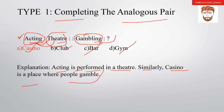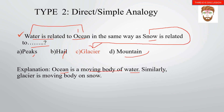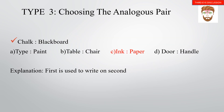Type 2 is direct or simple analogy. For example: water is to ocean. The ocean is a moving body of water. Similarly, a glacier is the moving body on snow. So water is to ocean as snow is to glacier.